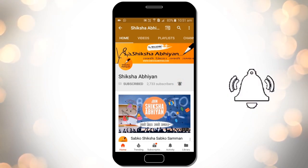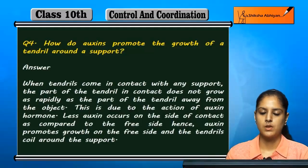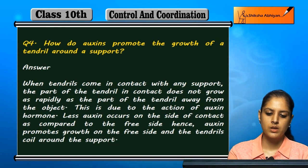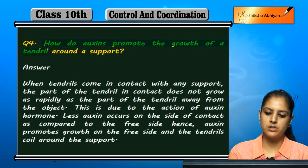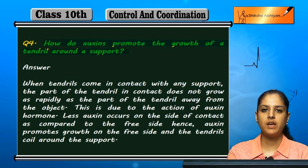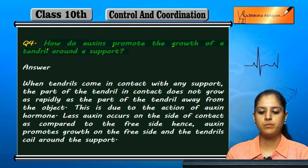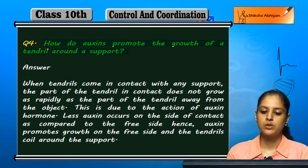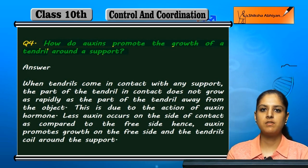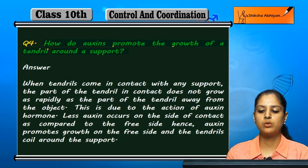Question 4: How do auxins promote the growth of a tendril around a support? A tendril hai aur iske aas paas ek support ke aas paas hai. So auxins ki wajah se uski growth kaise promote hogi?